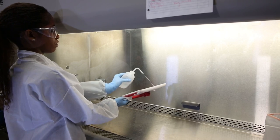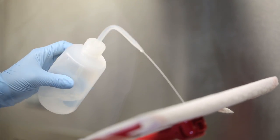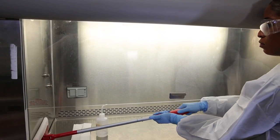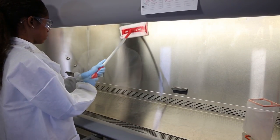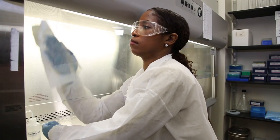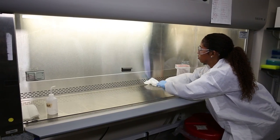Clean all of the surfaces with the liquid disinfectant and disposable towels. This includes the side walls, the back wall, the inside of the glass on the sash, and the work surface.